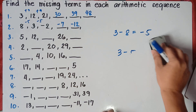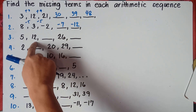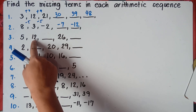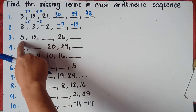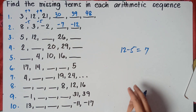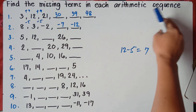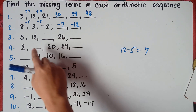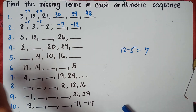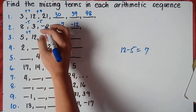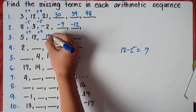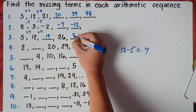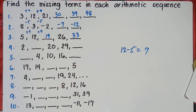Number 3: subtract the consecutive given numbers — 12 minus 5 equals 7. So the common difference is 7. Always remember, in arithmetic sequences you work with the common difference. So: 5 plus 7 is 12, 12 plus 7 is 19, 19 plus 7 is 26, 26 plus 7 is 33. We're done with number 3.